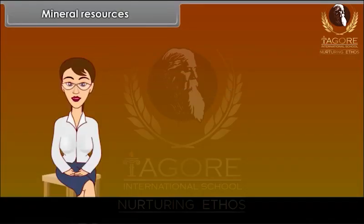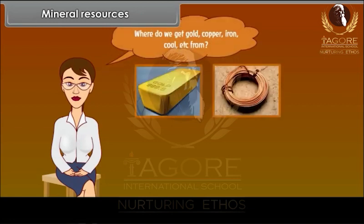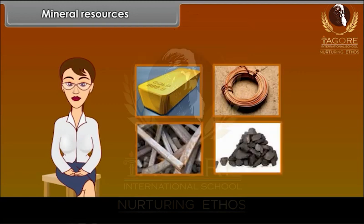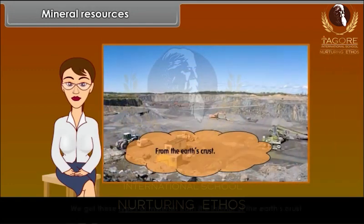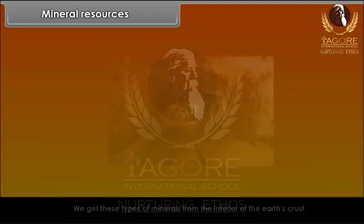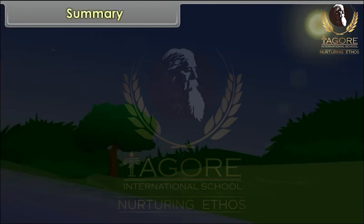Where do we get gold, copper, iron, coal, etc. from? From the earth's crust. All those resources which we get from the interior of the earth's crust by the process of mining are called mineral resources.